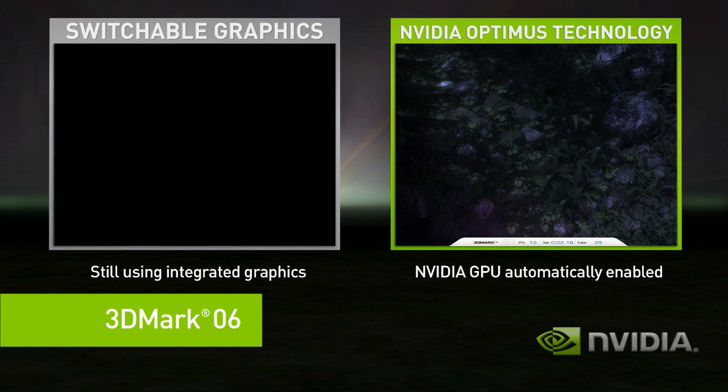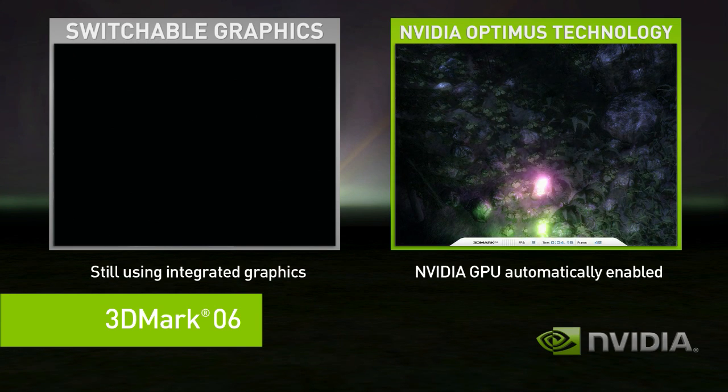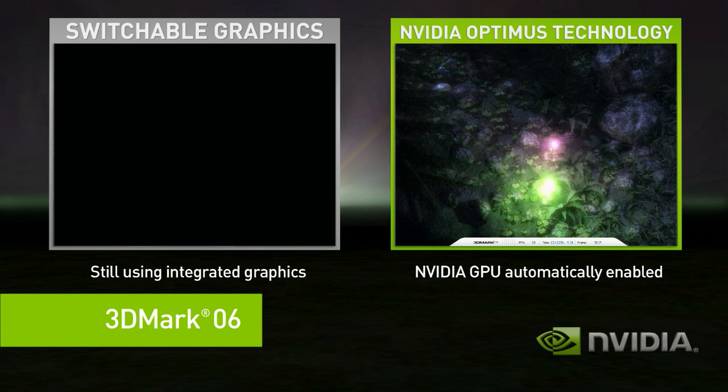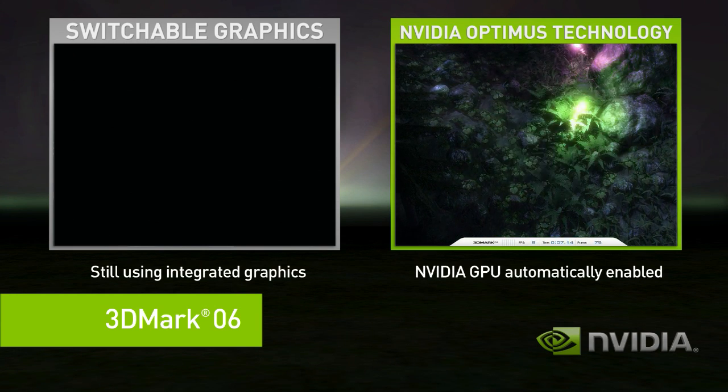Optimus, on the right-hand side, when it starts a complex application, it automatically uses the discrete GPU.